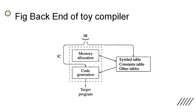IR is taken as input by the backend of the TOI compiler. IR is nothing but a combination of IC plus different tables — the symbol table, constant table, and mnemonics table. This IC and these tables are used by the backend of the TOI compiler.